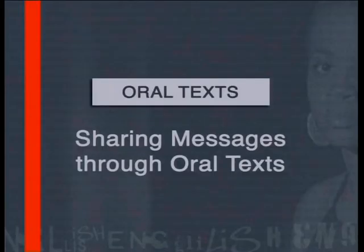Lesson 6 of the series explores sharing messages through oral texts. In this lesson Vanessa Bauer tells a story that will appeal to teenagers. The story is then analyzed in terms of its content and presentation. After the story has been told, you may want to stop the tape and ask learners to critique the story and Vanessa's performance before continuing to watch the lesson. Watching a story that is told well and identifying the traits that make it successful will help learners master the techniques of presenting oral texts for themselves.